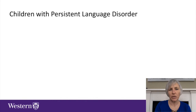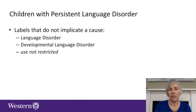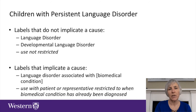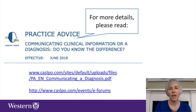So with regards to children with persistent language disorder, labels that do not implicate a cause can be used without restriction. Some examples include language disorder or developmental language disorder. However, labels that implicate a cause are restricted. An example is language disorder associated with a disease, or language disorder associated with a biomedical condition. In this case, the member is restricted in referring to the biomedical condition unless it has already been diagnosed by an authorized healthcare professional.